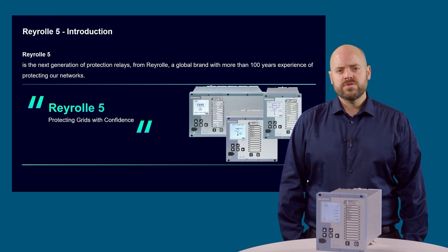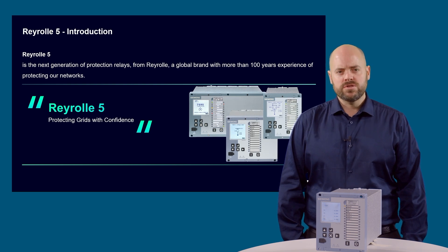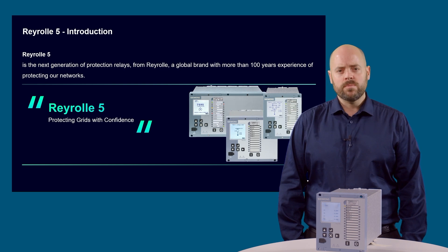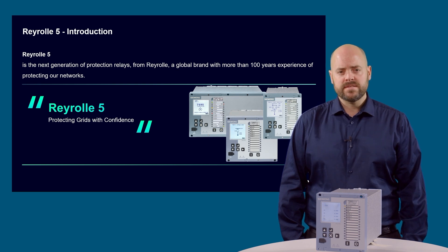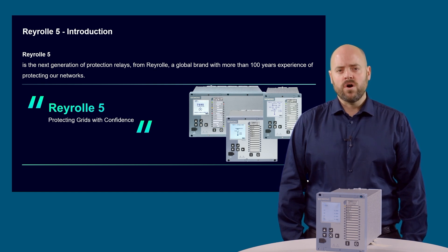This reduces training requirements and provides a cost-effective solution. Our experience in protection development for over 100 years combined with the latest technology allows us to bring you a comprehensive device using proven algorithms in protection, control and supervision functions, ensuring reliable operation. Rearroll 7SR5-4 devices are available in two case sizes, S8 and S12, suitable for panel or rack mounting. Let's take a look at the features and functions that the 7SR5-4 offers for transformer protection applications.